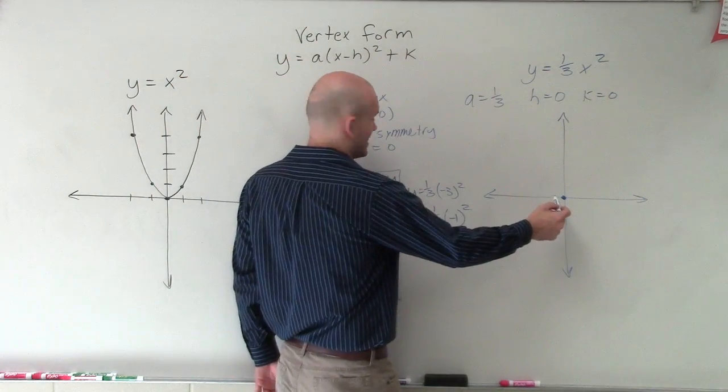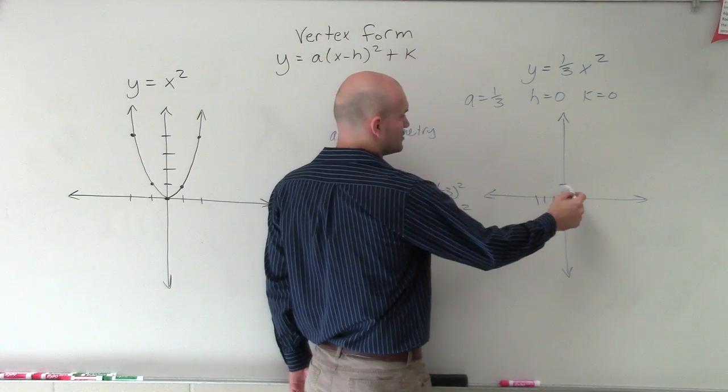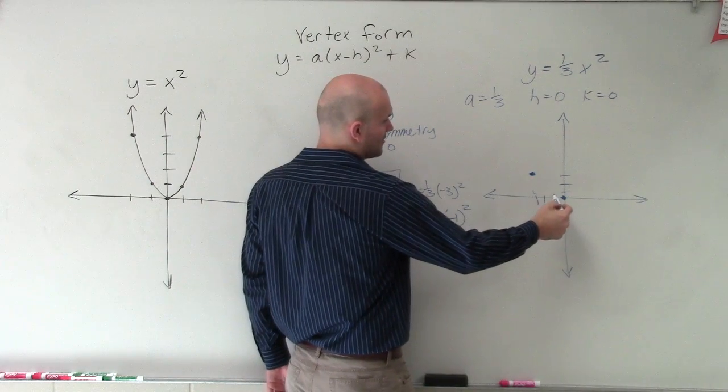So therefore, now I can see going over to negative 3, 1, 2, 3, I'm going to go up to 3, 1, 2, 3. And then going over negative 1, I'm going to go up 1/3.